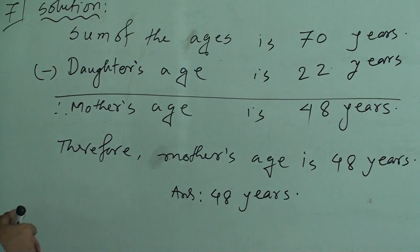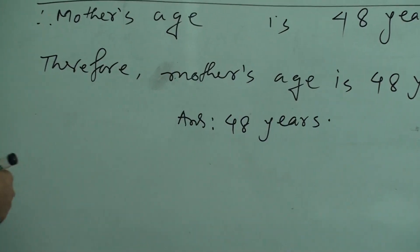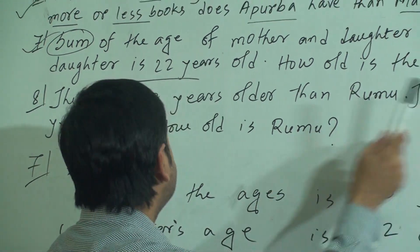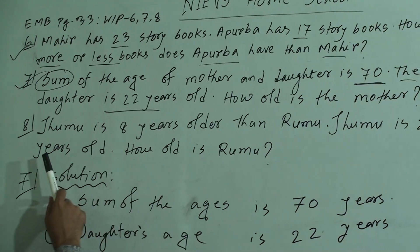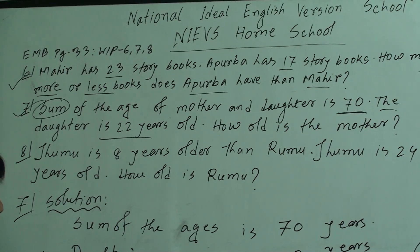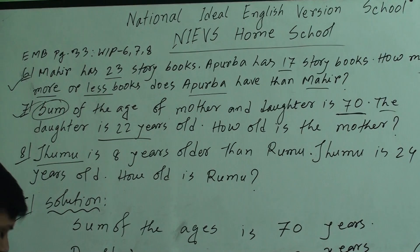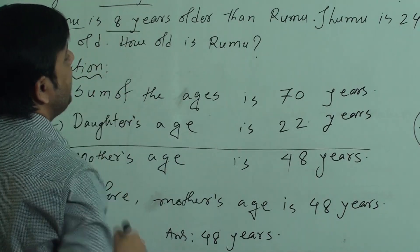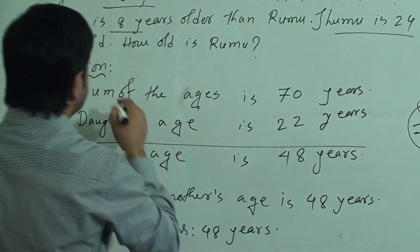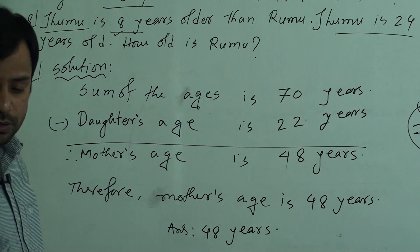I hope you have understood the solution of question 7. Now I will solve question 8. Question 8: Jumu is 8 years older than Rumu. Jumu is 24 years old. How old is Rumu? Jumu is older — 8 years older than Rumu. So the age of Jumu is 24. If we subtract 8 from the age of Jumu, we will get the age of Rumu. So we have to do subtraction.